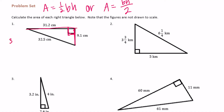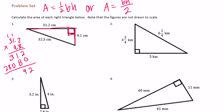31.2 times 9.1: 1 times 2 is 2, 1 times 3 is 3. Put a 0 down. 9 times 2 is 18, carry the 1. 9 times 1 is 9 plus 1 is 10, carry the 1. 9 times 3 is 27 plus 1 is 28. There were two digits behind the decimal point, so I move it over two places.